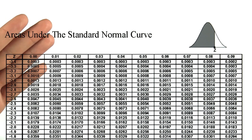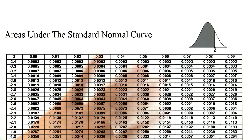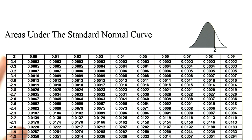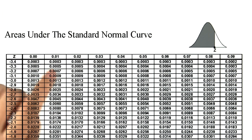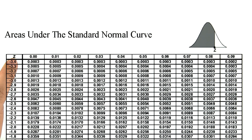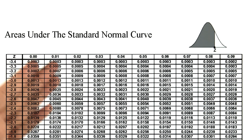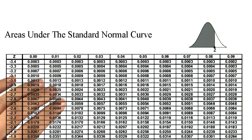This way, after standardizing any normal distribution — in other words, after calculating the z scores for the values that we're interested in — we can use this table to approximate the proportion less than that particular z score.